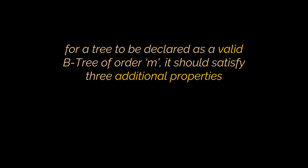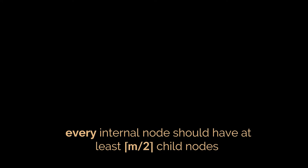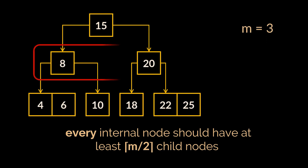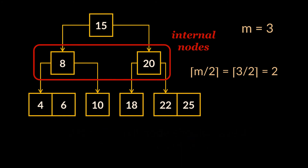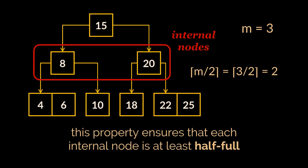In order for a tree to be declared a valid B-tree of order m, it should satisfy three additional properties. The first one is that with the exception of the root, every non-leaf node (also known as internal nodes) should have at least ceiling of m over two child nodes. This property ensures that each internal node is at least half full, implying that two half-full nodes can be joined to make a legal node, and one full node can be split into two legal nodes.